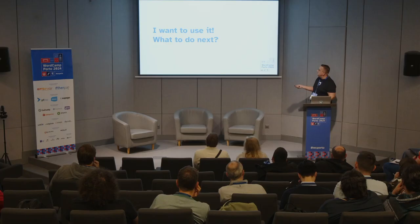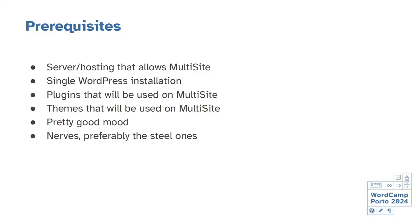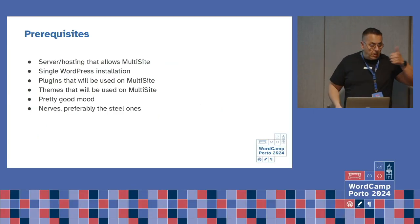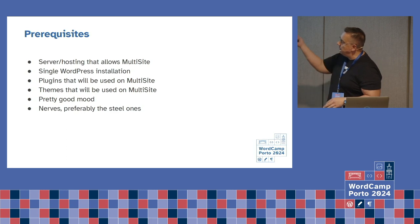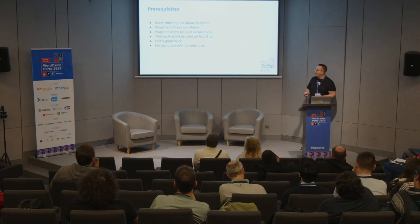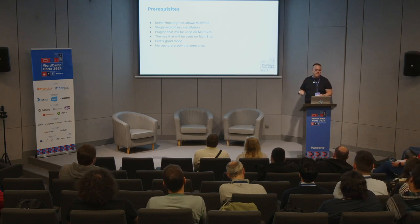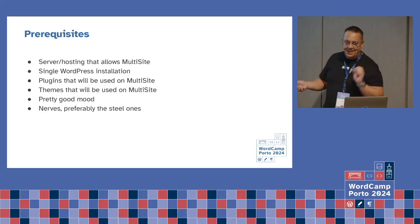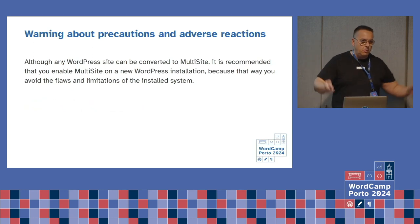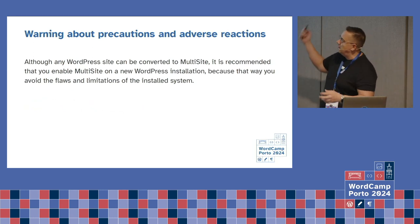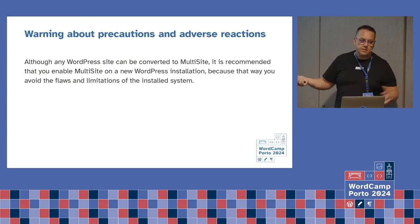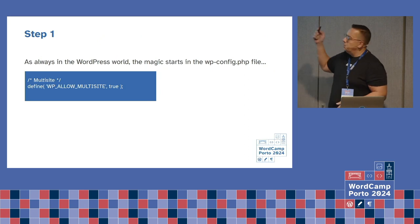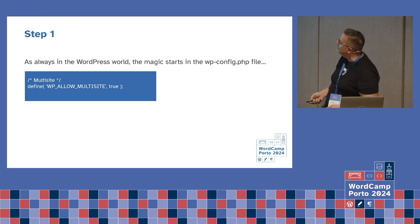So you want to use it — how do you do this? You need server hosting that allows multisite — shared hosting does not allow multisite. You have to buy a VPS, managed hosting, or similar. You need a single WordPress installation, a list of plugins you'll use, and a list of themes you'll use. You have to be prepared — and nerves, preferably steel ones. This is a warning: it would be best to use a newly installed system, starting from scratch. As always, you begin in the WordPress wp-config file and add those lines.